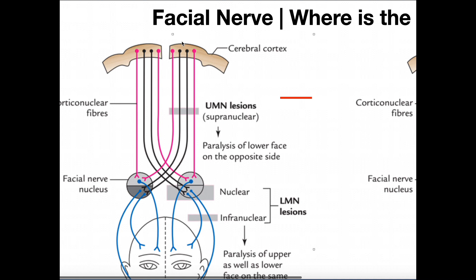Let's zoom in so we can see it better. We can follow this particular upper motor neuron down and see that it's going to synapse with this blue lower motor neuron. Let's look at this pink one — it's on the same side, the patient's left facial nerve. We follow this one down, but notice this upper motor neuron actually crosses over and innervates this lower motor neuron on the other side. Notice both of those are going to the forehead — they're likely innervating the frontalis muscle.